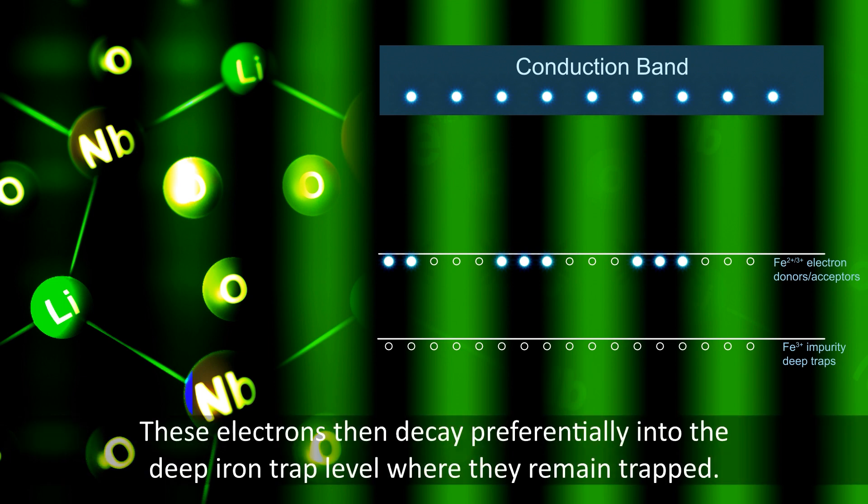These electrons then decay preferentially into these deep iron trap levels where they remain trapped.